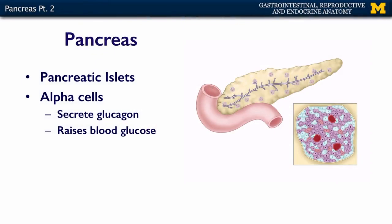One of these cell types are the alpha cells. Alpha cells secrete glucagon, which then acts on the liver to raise blood glucose. So when blood glucose is low, alpha cells secrete glucagon, and blood glucose goes up.